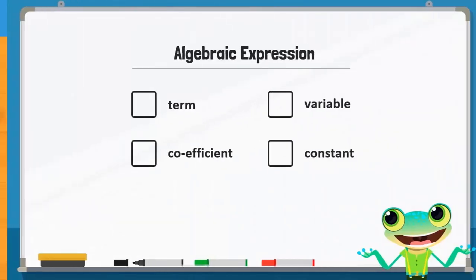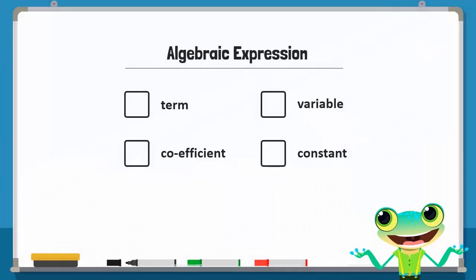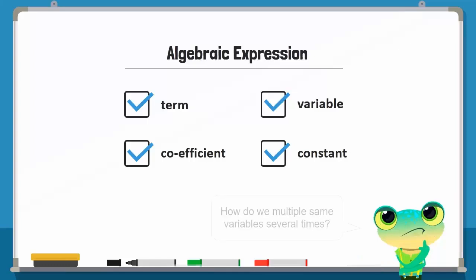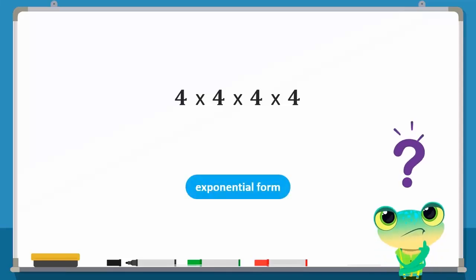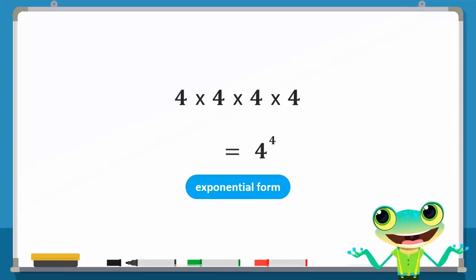We just learned what an algebraic expression contains. Now let's see how we can multiply the same variable several times. Can you write 4 times 4 times 4 times 4 in the exponential form? In the exponential form, it is written as 4 to the power 4.